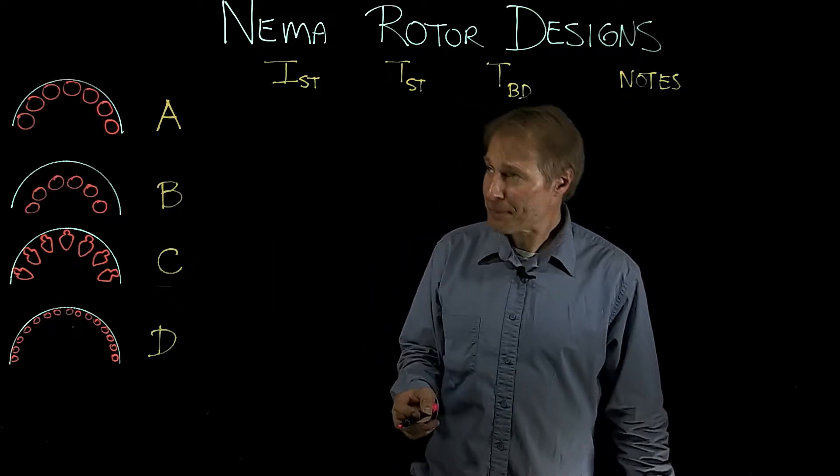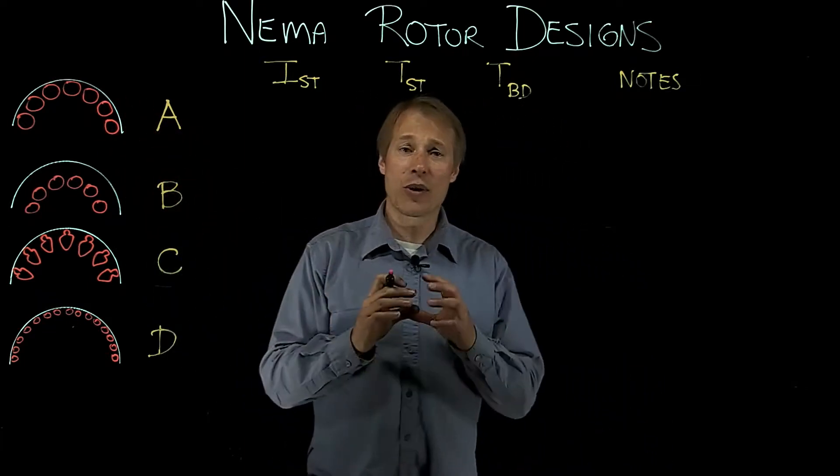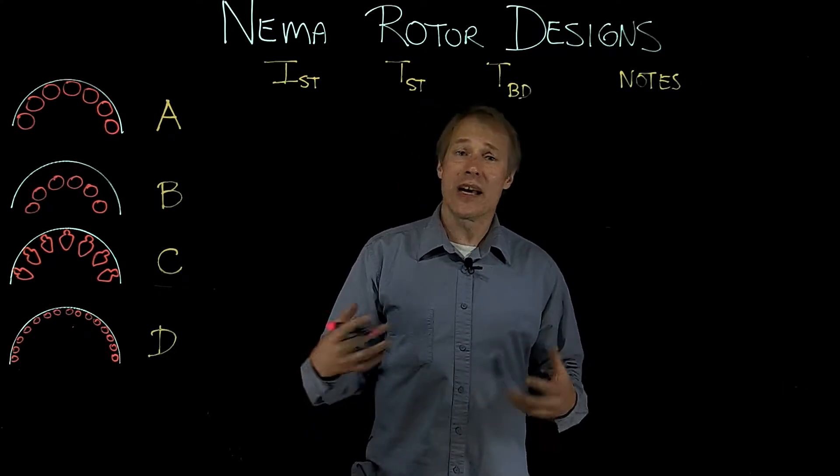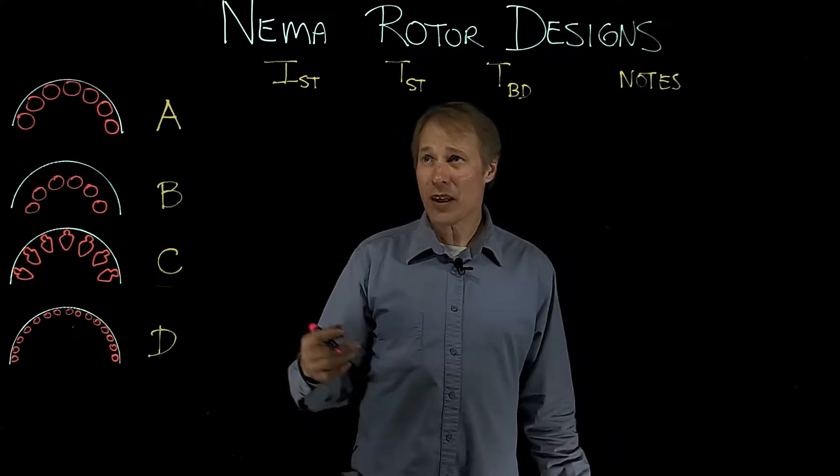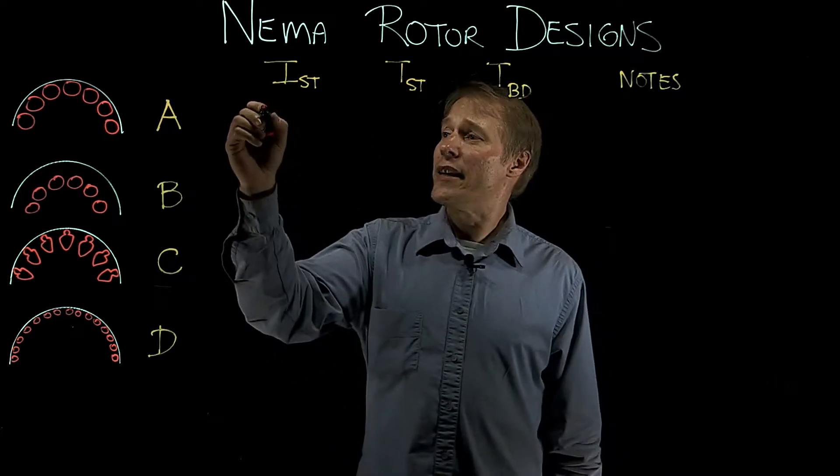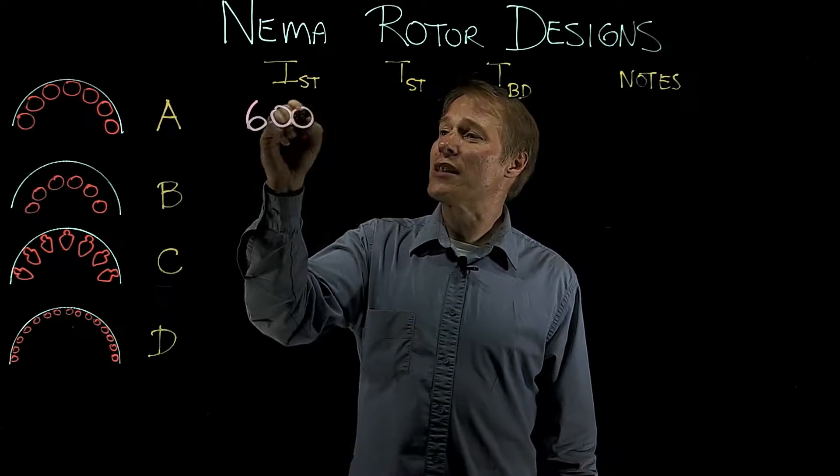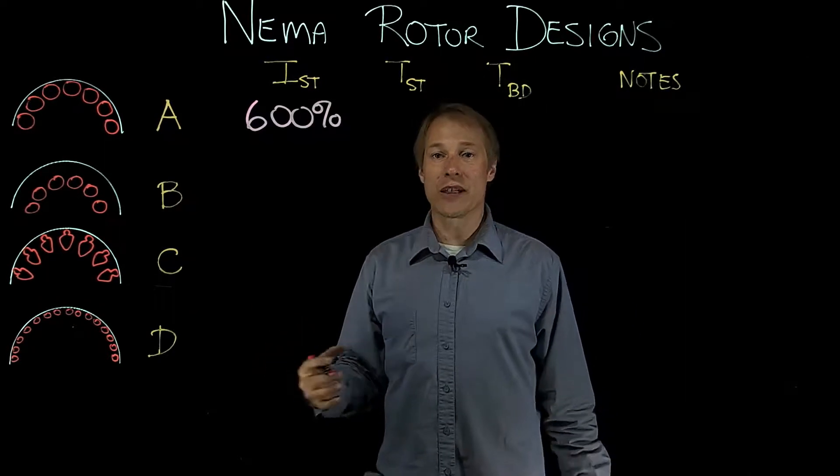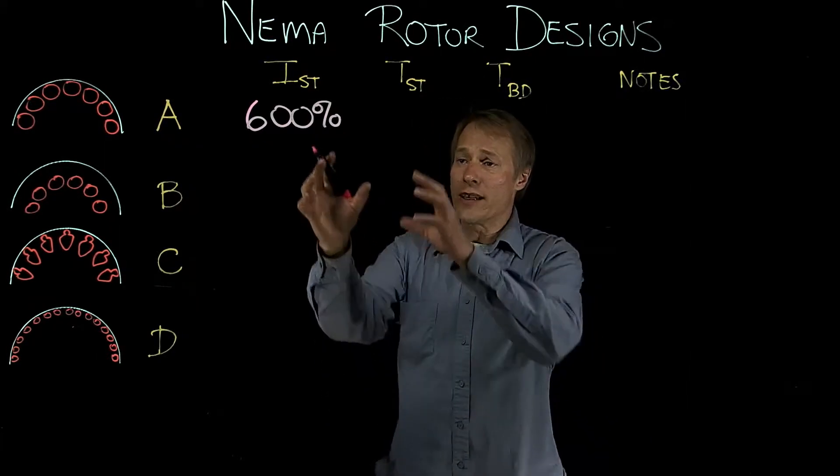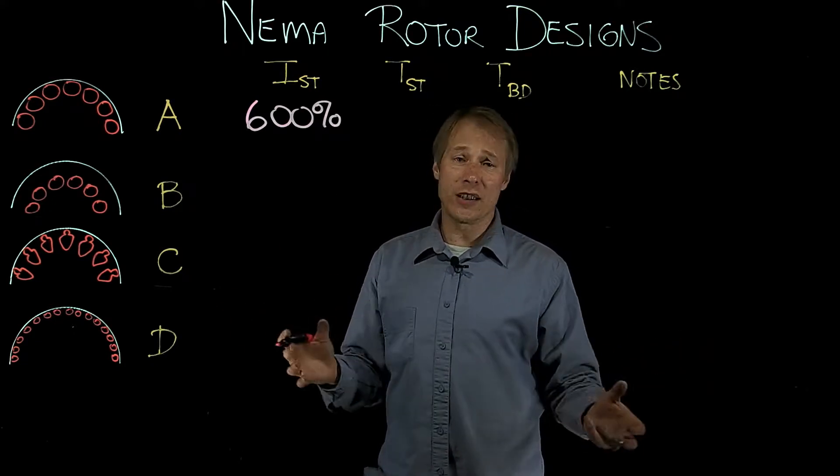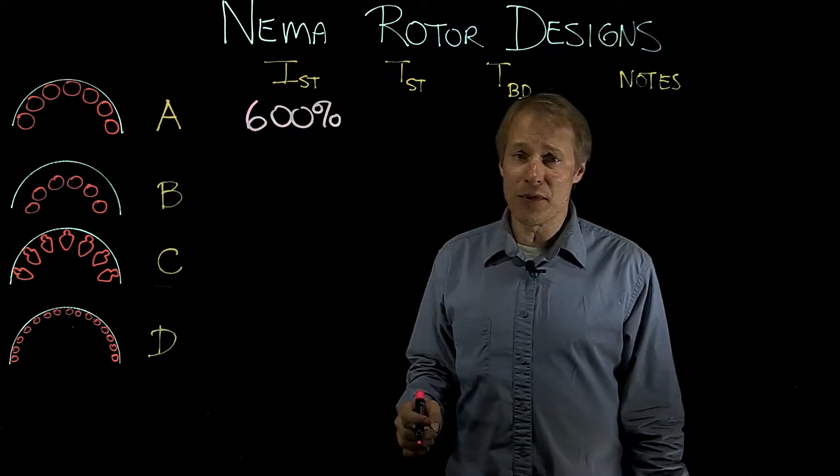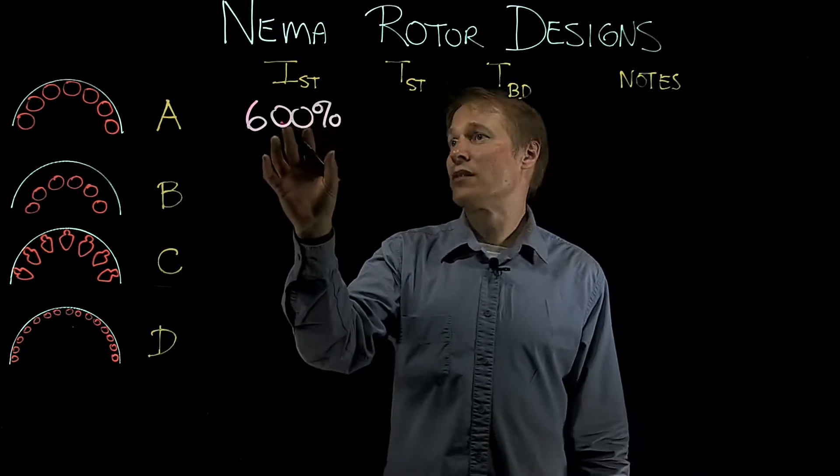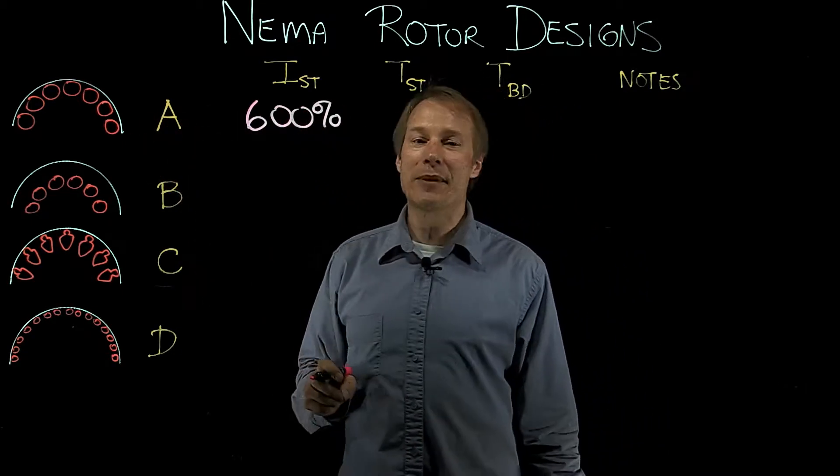So the NEMA A, as you can see the rotor bars are quite large, which means there's going to be a low resistance. If you have low resistance, you're going to have a high current, and the high starting current is going to be around 600% of the FLA of this motor. So that's the full load current. We're looking at percentages of all of these because that's going to change depending upon each individual motor. So 600% starting current for the NEMA A rotor.